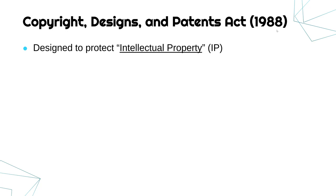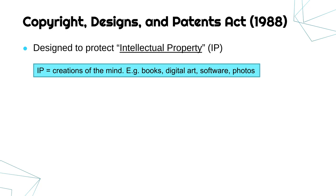This IP has nothing to do with the IP in IP addresses — it's a whole other term. IP refers to creations of the mind, so something which a human brain thought up is classed as intellectual property and is covered by this law. Things like books, digital art, software, and photos. You could argue a book is a physical thing, but the idea about the story — what's in the book — is what's covered. There are laws to stop people stealing cars or laptops; this is about stealing ideas.